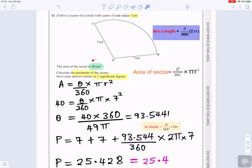The area is giving us 40, so we swap in 40. The angle, we don't know the angle, divided by 360 times pi, which is 3.142, times the radius, which is 7 squared.